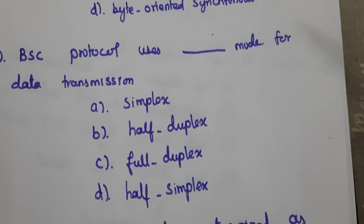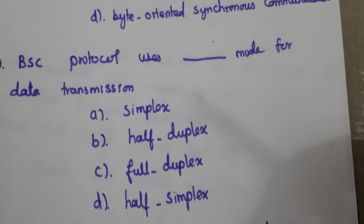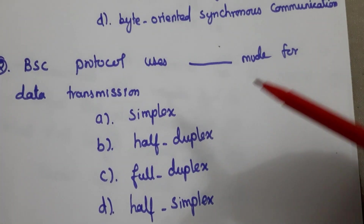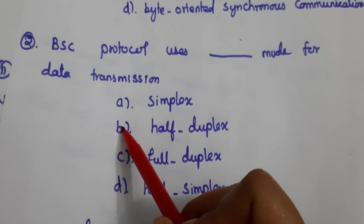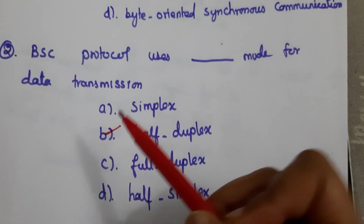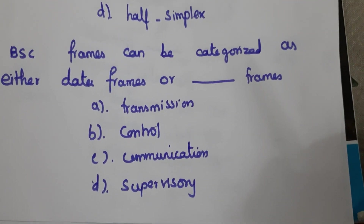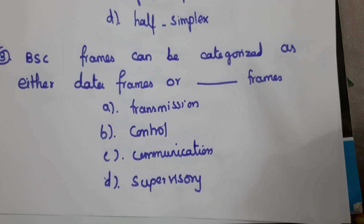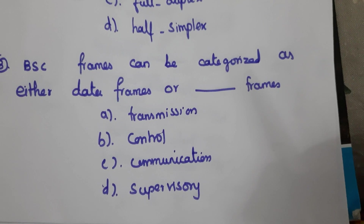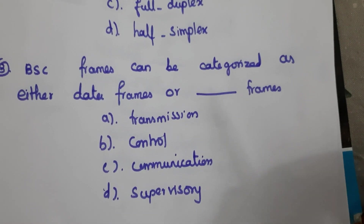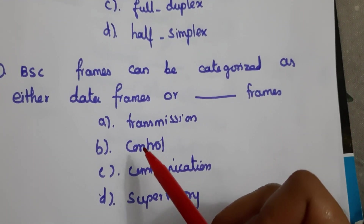Next question: BSC protocol uses which mode for data transmission? BSC uses half-duplex mode for data transmission, so the answer is B. Next question: BSC frames can be characterized as either data frame or control frame.